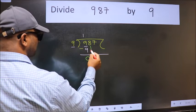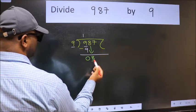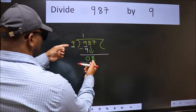After this, bring down the beside number. So 8 down. Now here we have 8 and here 9. 8 is smaller than 9.